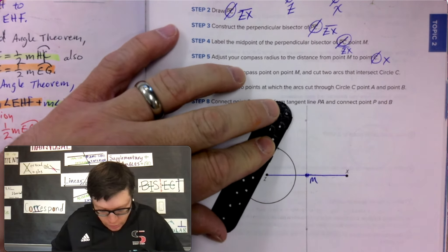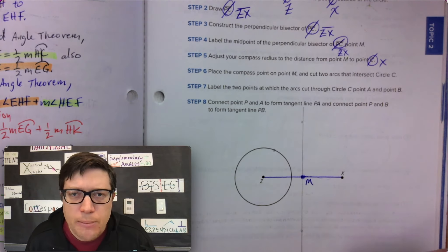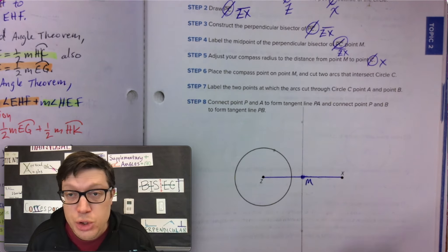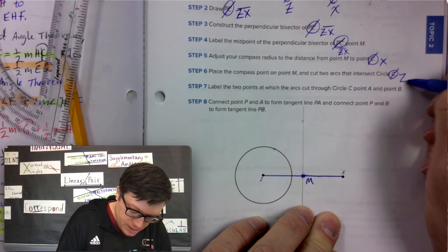So I'm creating, I end up creating a dot. Do we want to label it anything? Point M, place point M, cut two arcs that intersect circle, it's not circle C, it's circle Z.